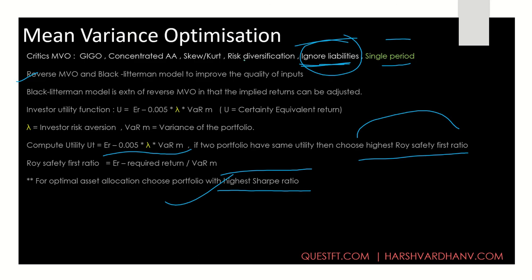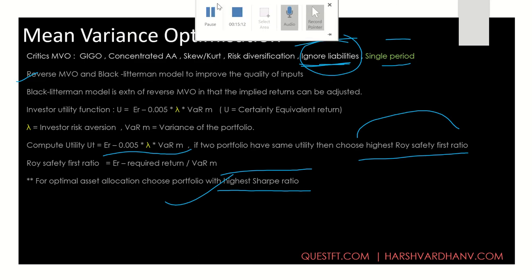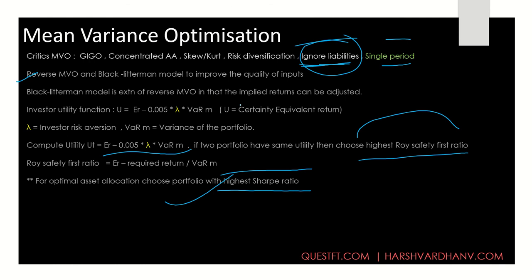By using these three methods — surplus optimization, the two-portfolio approach, and the integrated ALM approach — you solve the problem of ignoring liabilities in mean-variance optimization. This is the main conceptual takeaway, more from an understanding point of view rather than getting lost in definitions.